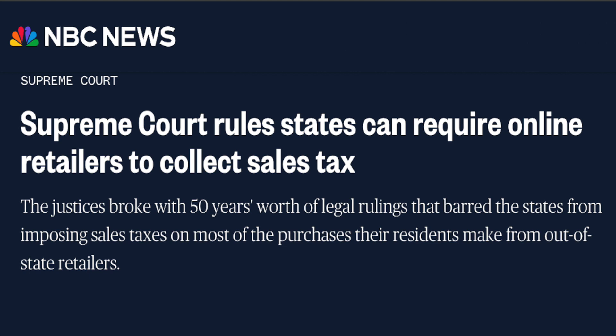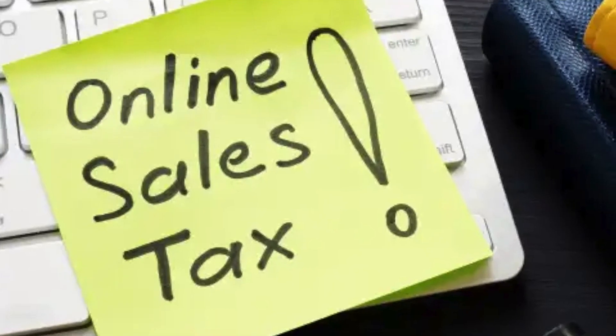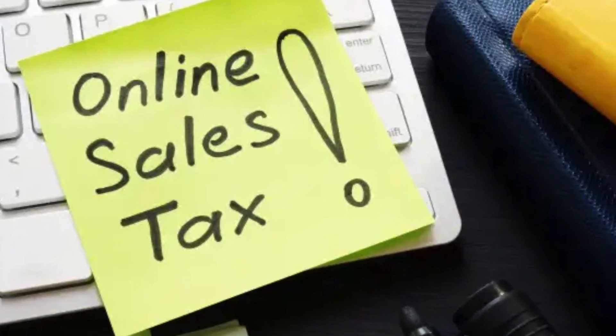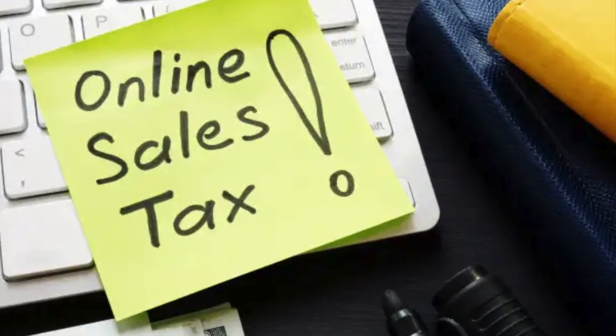But states that were losing out on tax money got fed up and took the issue to court. The Supreme Court decided that even if an online store doesn't have a physical location in a state, if they're shipping stuff to it, they've technically got a presence there — meaning they've got to collect sales tax. Most states now have laws that make big online marketplaces, like Etsy and eBay, handle this tax stuff for the sellers. So the next time you're shopping online and see that extra tax on your bill, it's because of this court ruling.